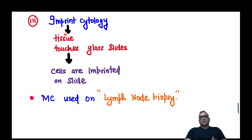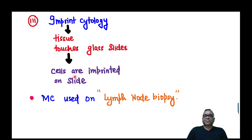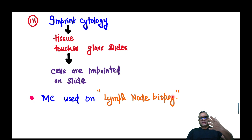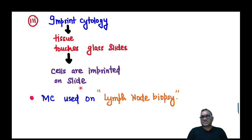The third branch is imprint cytology. We take out biopsy tissue and touch it onto a glass slide — cells are then imprinted on the slide, which is why it is called imprint cytology. Most commonly it is used on lymph node biopsy. For example, during gastric resection for suspected malignancy, a surgeon cuts the lymph node in two pieces and touches the open area to the slide to check for metastasis.